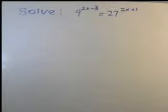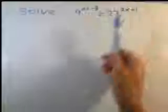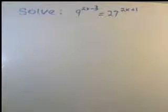Same base property basically states that if we have a common base then our exponents will be equal. The common base in this equation is pretty easy.